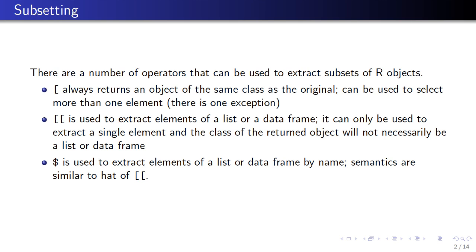So if you subset a vector, you're going to get back a vector. If you subset a list, you're going to get back a list. Anytime you use the single bracket operator to subset an object, you'll get an object of the same class back. Furthermore, the single bracket operator can be used to select more than one element of an object, with one exception that we'll get to later.